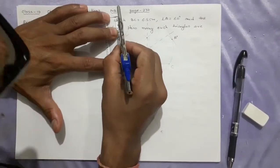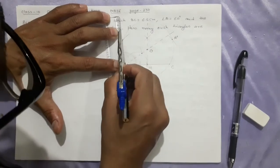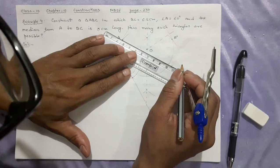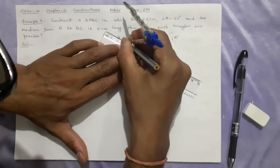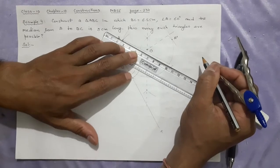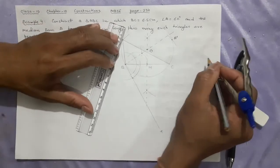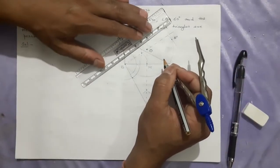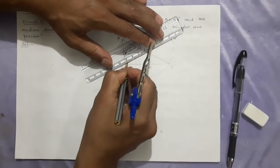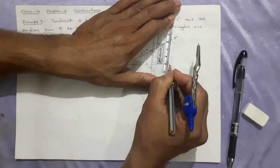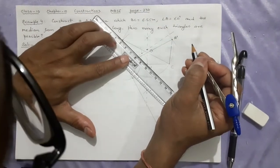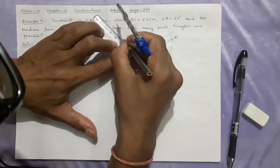This will be called A, this will be called A dash. Now only joining is required. What are the points to be joined? Just like previous, I will join AB. I will join AC. And what I will join here? A dash B.